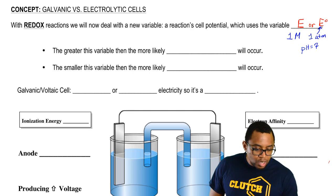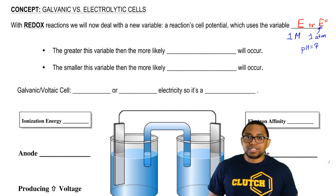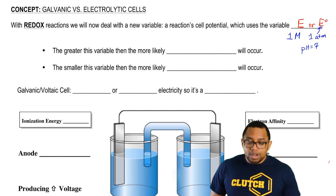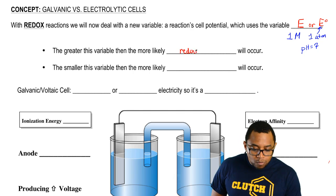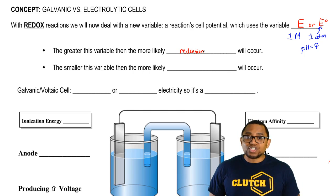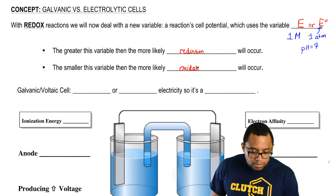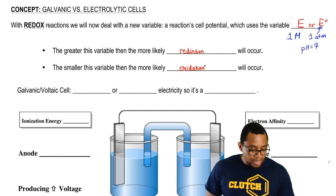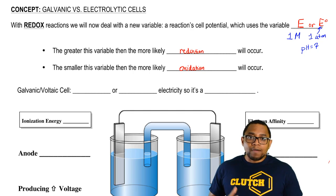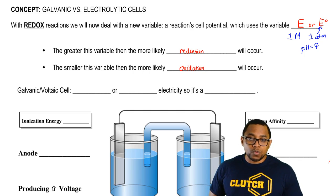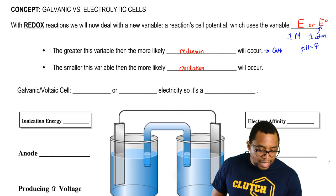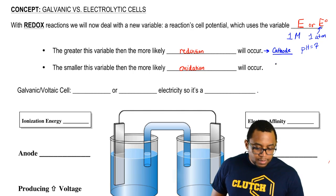When we have these conditions, we're talking about cell potential under standard conditions. The greater the variable, the more likely reduction will occur, and the smaller this variable, the more likely oxidation will occur. Remember, reduction predominantly happens at the cathode and oxidation happens at the anode.